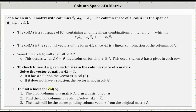We will also want to find a basis for a column space. The pivot columns of matrix A form a basis for the column space of A. We find the pivot columns by solving the equation A times vector x equals the zero vector. The basis will be the corresponding column vectors from the original matrix A, not from the columns after performing row operations.